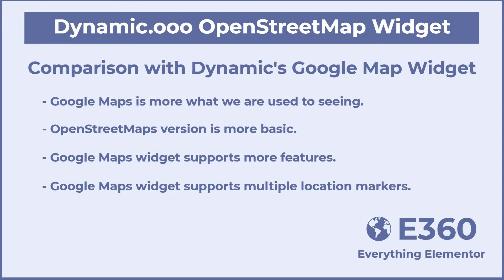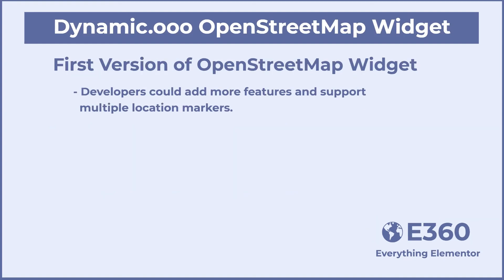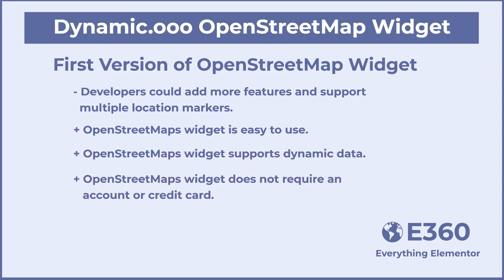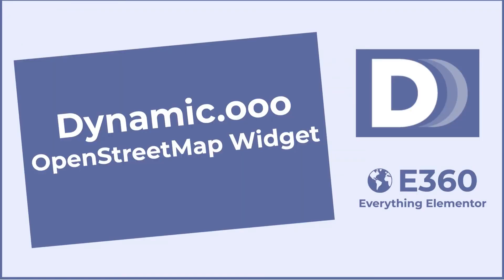The OpenStreetMap API does support more features than are currently available in the widget. Another comparison with the dynamic Google Maps widget is that the Google version allows you to show a marker for more than one location. It would be nice to show markers for more locations with the OpenStreetMap widget. However, this is the first version of the widget and I believe the dynamic developers plan to add multiple locations and perhaps more customization options. Still, even with the limitations, the OpenStreetMap widget is extremely easy to use and the dynamic data options mean you can use it in templates. It's nice to have the OpenStreetMap option so we don't have to go through setting up an involved Google project and we don't have to enter any billing information to show a simple map on our Contact Us page. Overall, I was happy with the OpenStreetMap widget — it's one of the features that just works.